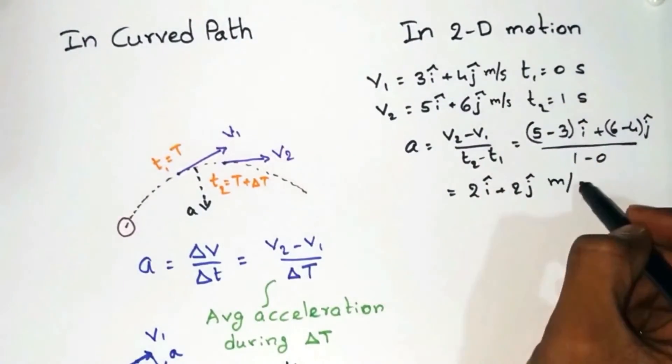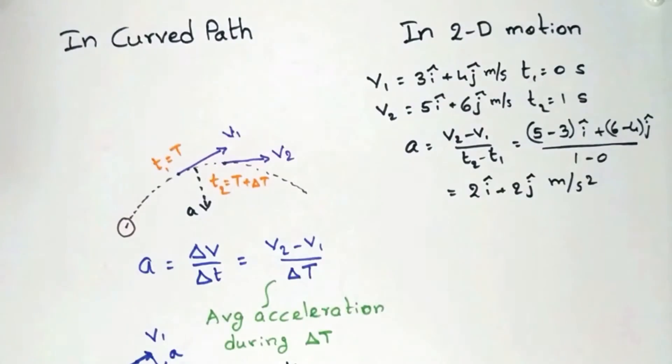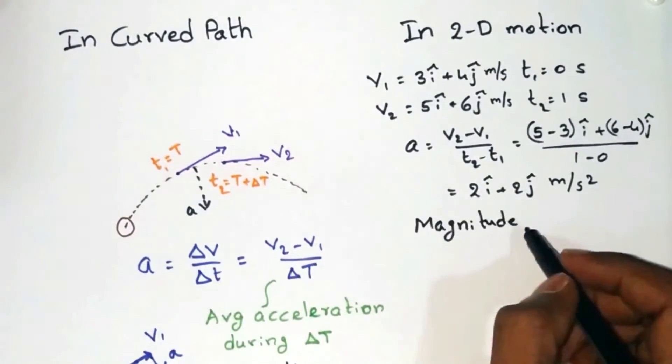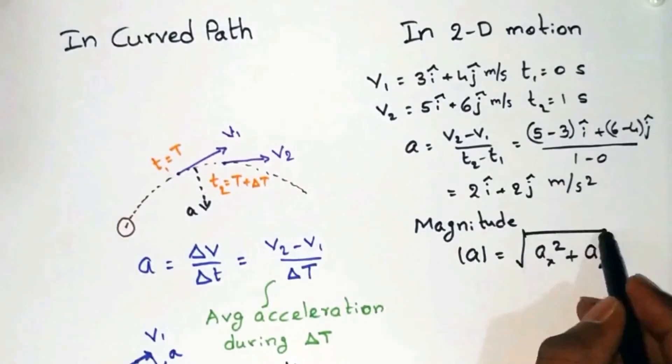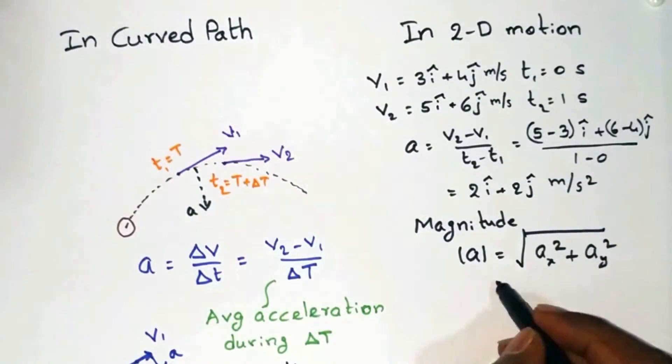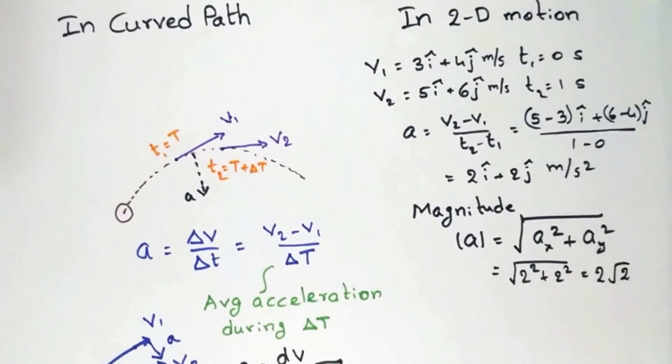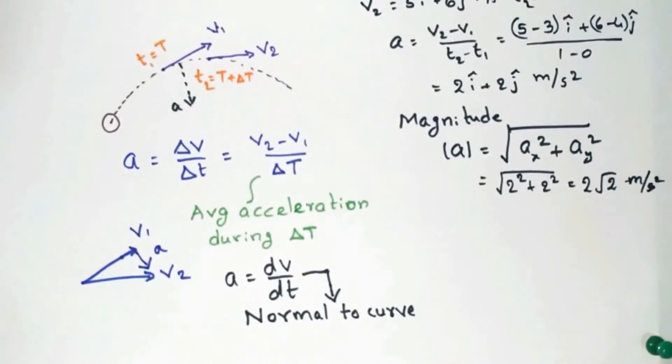Since this is a vector, it has both magnitude and direction. So in order to find the magnitude of the acceleration, find the square root of the sum of the squares of components of acceleration, which gives 2 root 2 meter per second square.